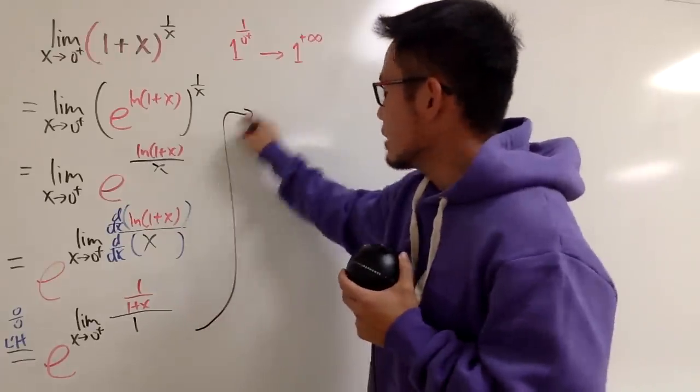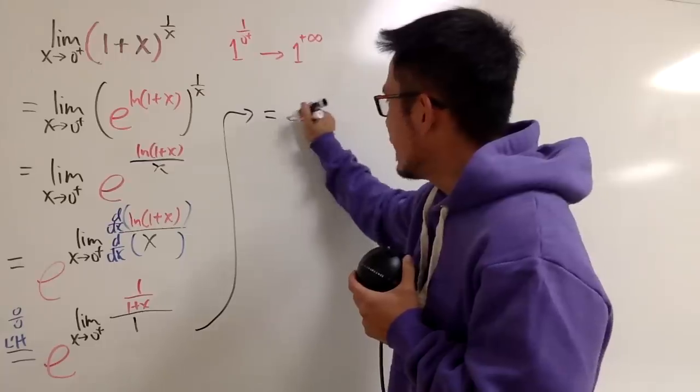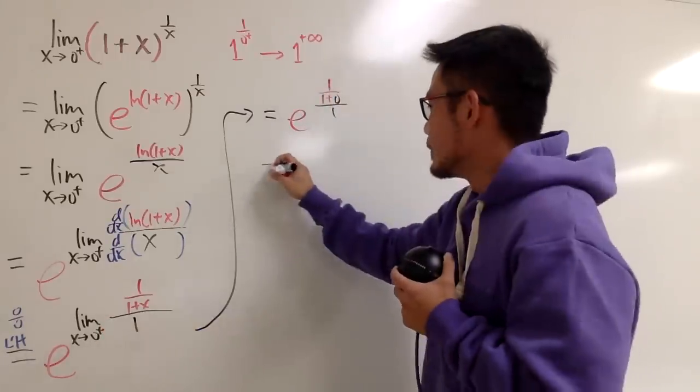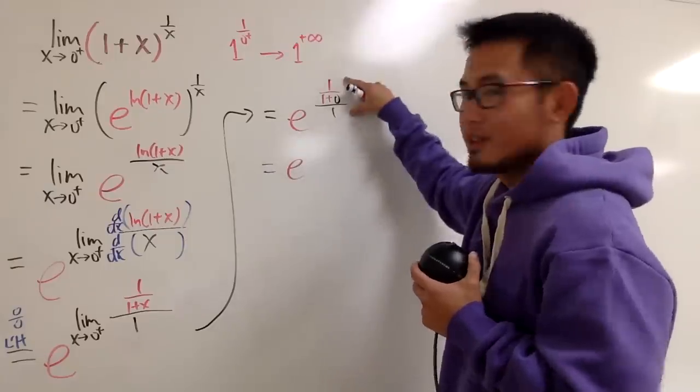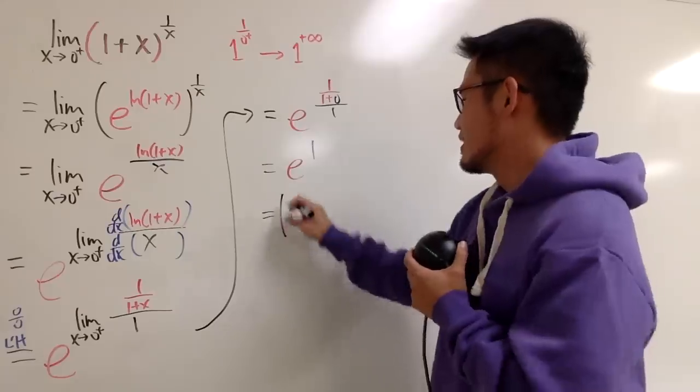And let's see. This is equal to, I still have the e for the base, and now, I will plug in 0 into here. Anyway, this is just e raised to the first power is 1. This is that special number again, e. Aha!